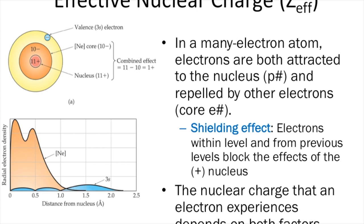To understand trends on the periodic table, you first need to understand effective nuclear charge. Effective nuclear charge is basically the charge of the nucleus minus any of the shielding effect that is occurring because of the core electrons. The nucleus is positive because of the protons, electrons are negative, so there's an attraction there. The valence electrons experience less of a pull from the nucleus because of all the core electrons that are closer to the nucleus, blocking some of that positive attraction — we call that the shielding effect. The effective nuclear charge has a lot to do with trends.